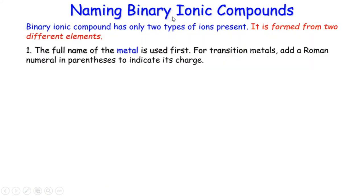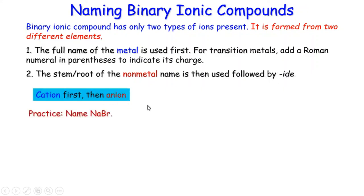Now naming binary ionic compounds. Binary means only two types of ions. Step number one, the full name of metal is used first. For transition metals, make sure you use Roman numeral in parentheses. Step number two, use the stem or the root of the non-metal name and then use -ide as a suffix. Basically we just use the ion's name. Therefore cation ion first, then the anion.